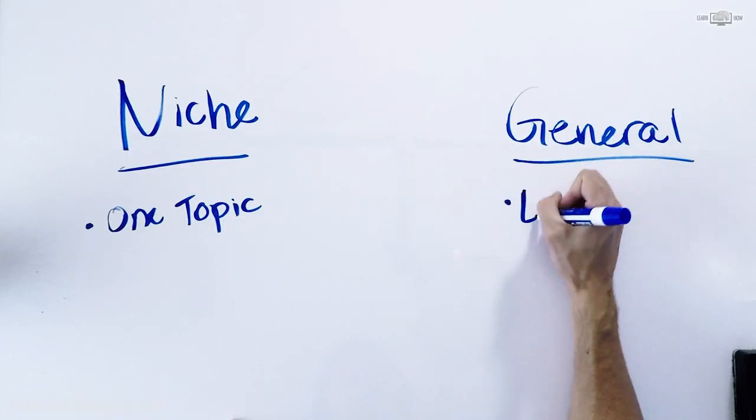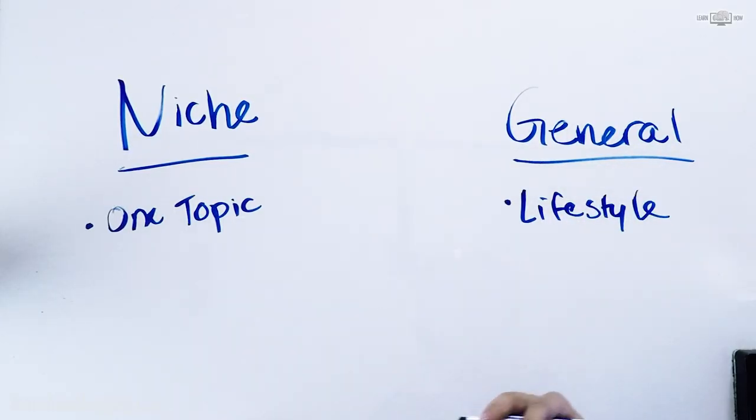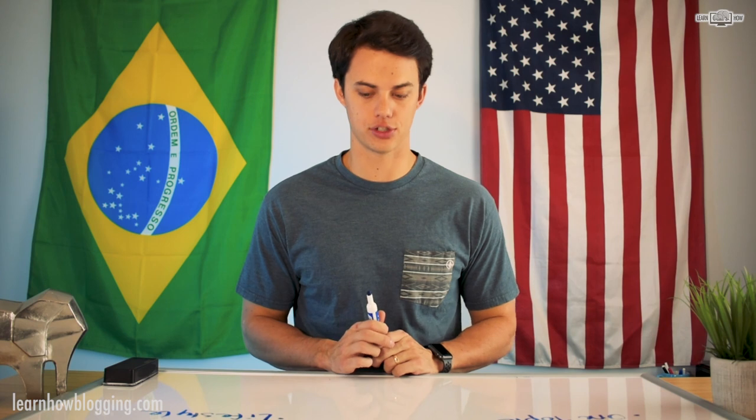A general blog would be something like a lifestyle blog — that's a term a lot of people throw out. It's kind of a fancy way to say you're a general blogger who writes about anything. Lifestyle blogs might have multiple topics: maybe a category for cooking, a category for travel, and a category for decorating.